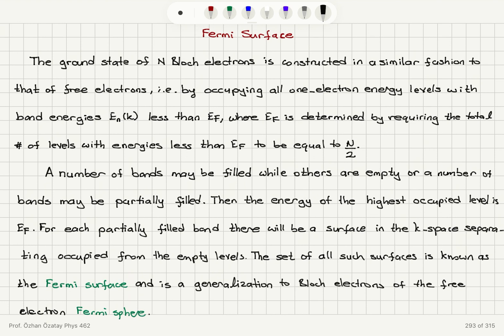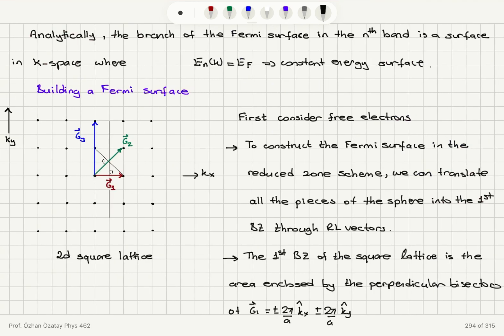If a band is partially filled, we look at the energy of the highest occupied level and call that the Fermi level. For each partially filled band, there will be a surface in k-space separating occupied levels from empty levels. The set of all such surfaces is known as the Fermi surface — a generalization to Bloch electrons of the free electron Fermi sphere. Analytically, the branch of the Fermi surface in the nth band is a surface in k-space where the energy equals the Fermi energy — a constant energy surface.